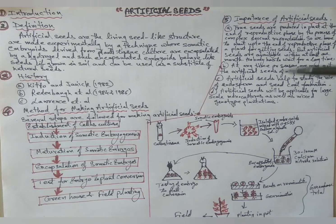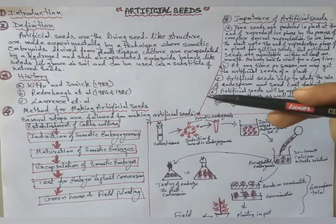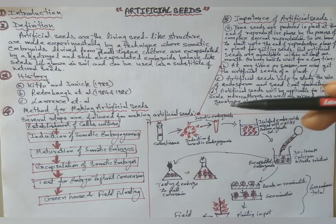Introduction: In nature, true seeds are the product of fertilized ovules consisting of a zygotic embryo.